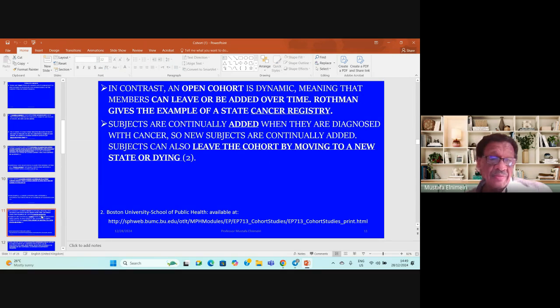In contrast, an open cohort is dynamic, meaning members can leave or be added over time during the follow-up period. We can have new members added and current members who leave. Rossmann gives an example of a state cancer registry.